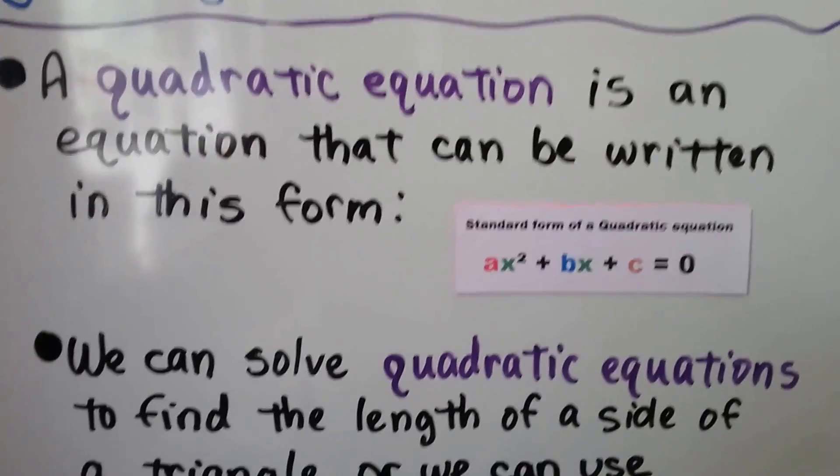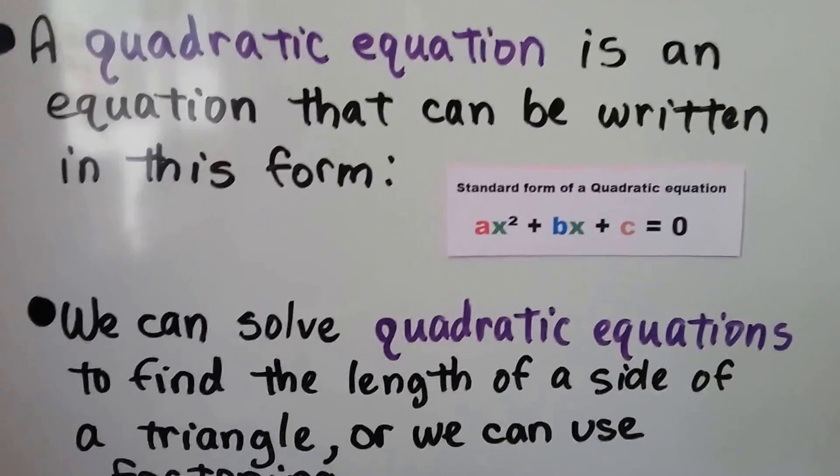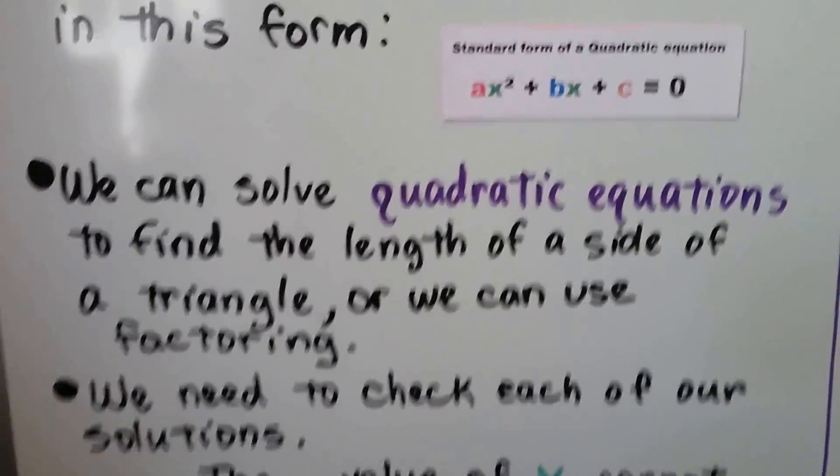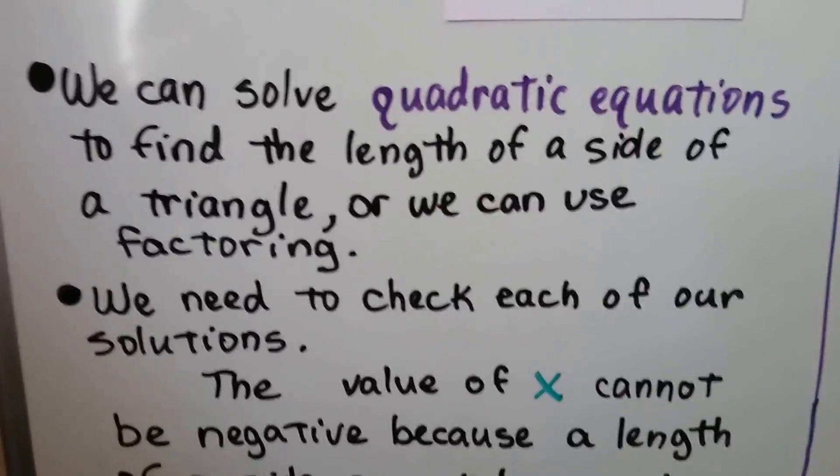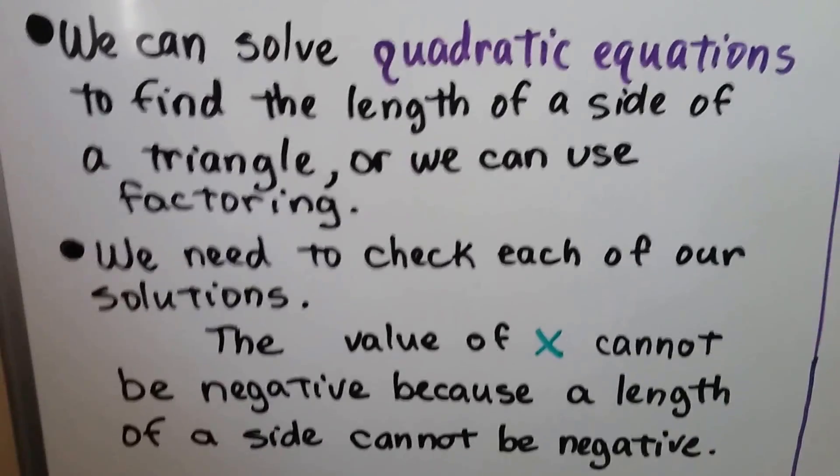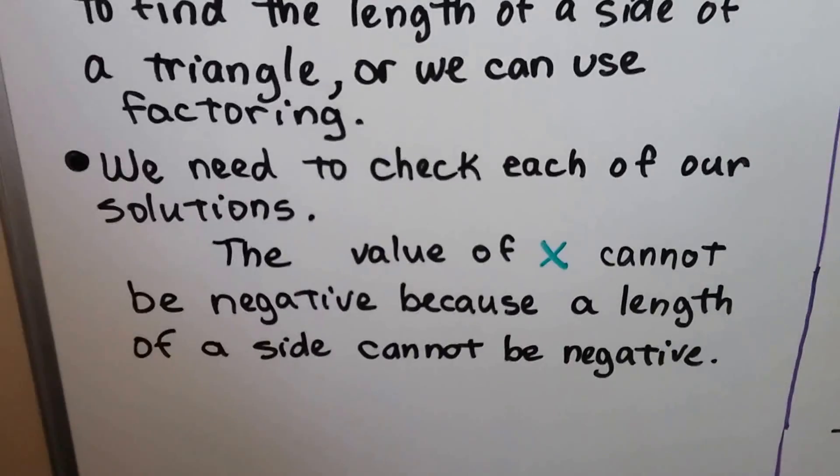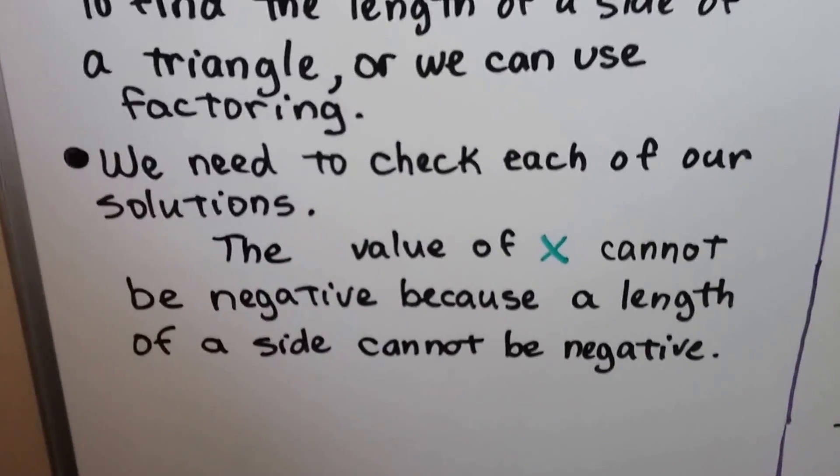A quadratic equation is an equation that can be written in this form: ax² + bx + c = 0. We can solve quadratic equations to find the length of a side of a triangle, or we can use factoring. We need to check each of our solutions. The value of x cannot be negative because the length of a side cannot be negative.